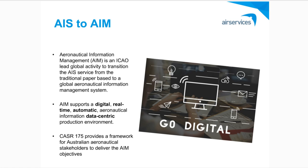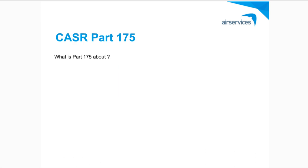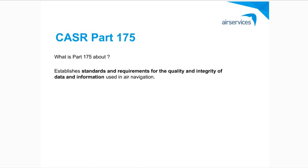Within Australia, CASA have introduced CASR Part 175 to provide a regulatory framework to assist Australia's transition to the AIM goals. It's a framework that puts standards and requirements in place for aeronautical data to ensure safe air navigation. The regulation has sub-parts, paragraphs and sub-paragraphs, but today we're just going to look at two sub-parts.